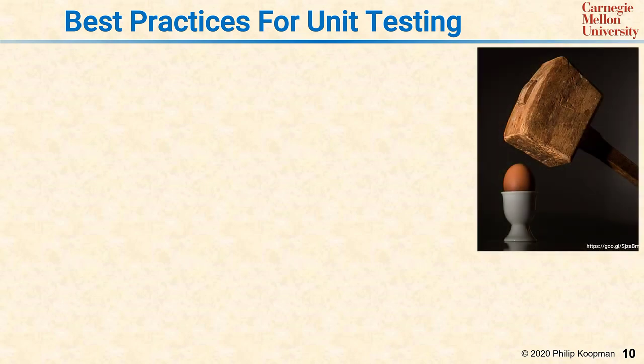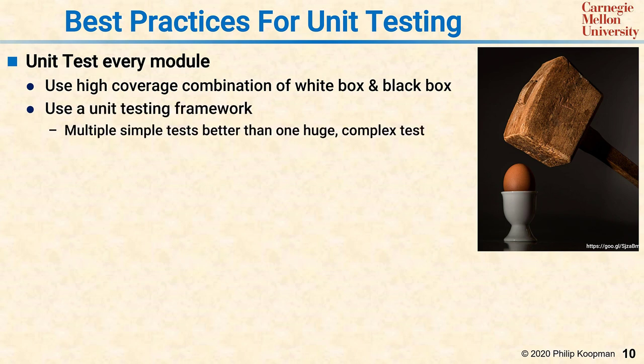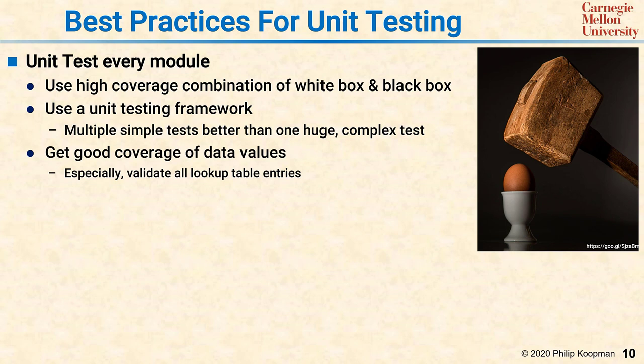Here are some best practices for unit testing. You should unit test every module in your system. Use a high coverage combination of white box and black box testing, ideally with a granular coverage metric such as MCDC coverage or branch coverage. Use a unit testing framework such as CUnit and break tests up into fairly small chunks so it's easy to understand what each test does. Don't forget to get not only control flow coverage, but also good data value coverage such as validating all lookup table entries, checking for divide by zeros, and checking for unusual exceptional data values.